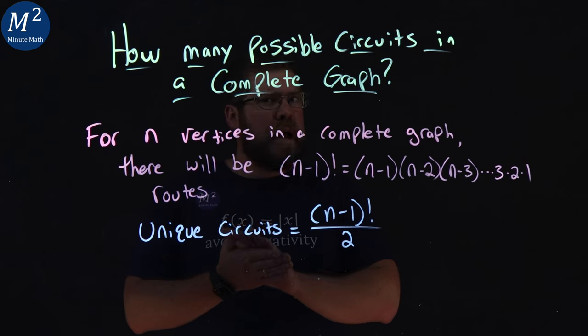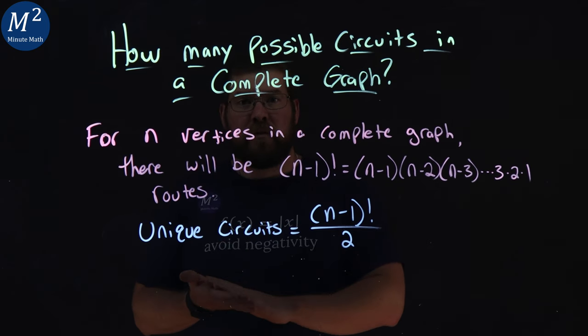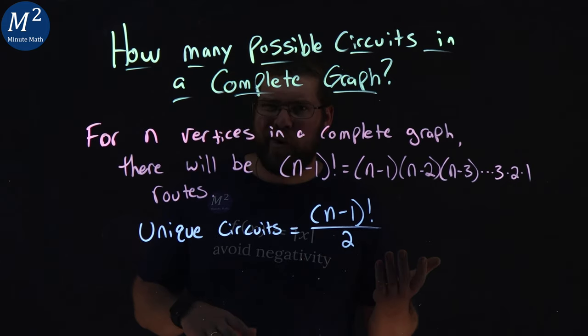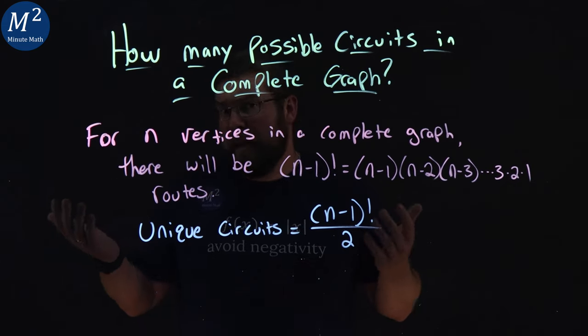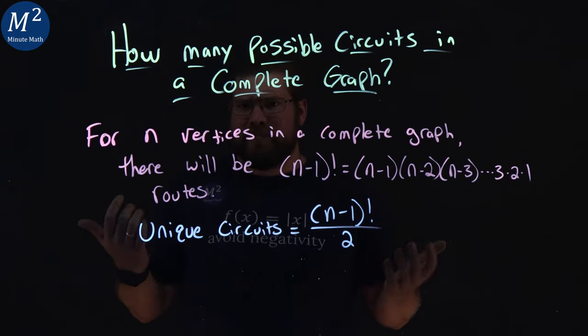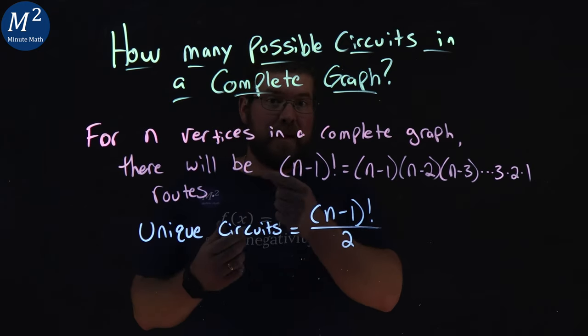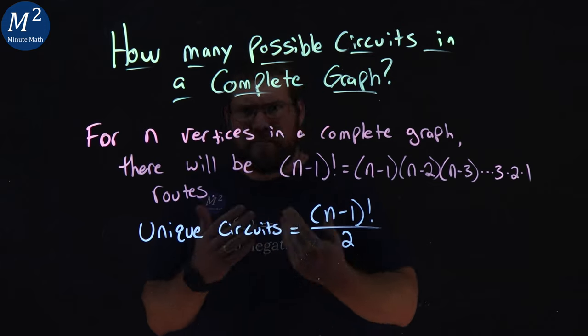This is kind of double counting a circuit. Basically, a circuit going one way and reverse. Think of it as clockwise versus counterclockwise on the same path. It's the same circuit just going a different way, but it's still the same combination in the same exact order, just backwards.